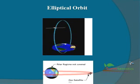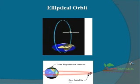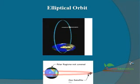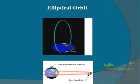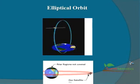An elliptical orbit follows an oval-shaped path. One part of the orbit is closest to the center of Earth (perigee) and the other part is farthest away. Communications satellites in elliptical orbits cover the areas in the high northern and southern hemispheres that are not covered by geostationary satellites.